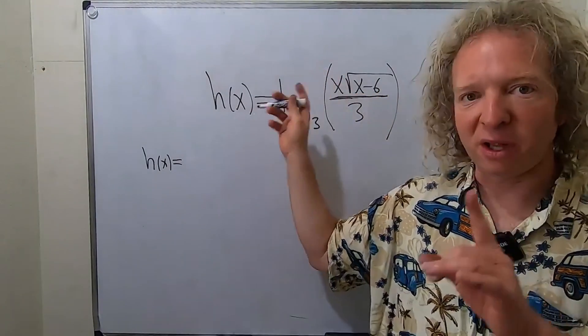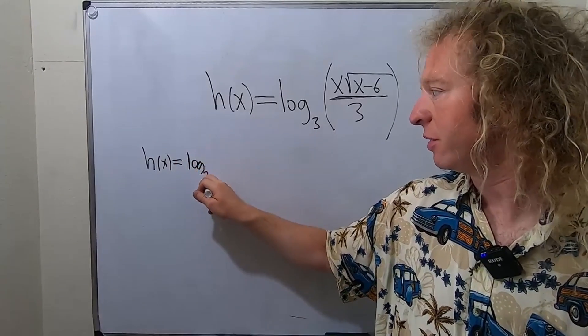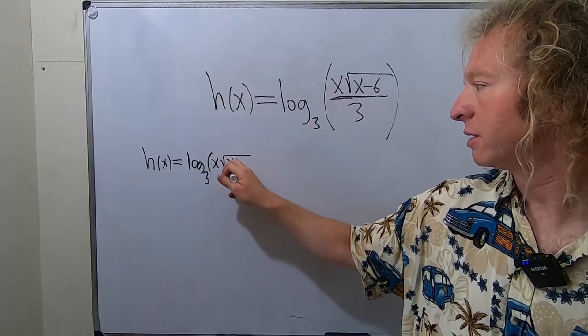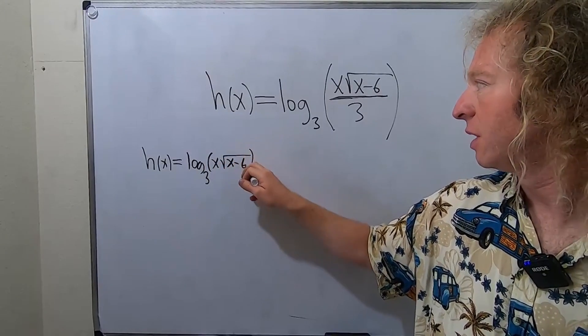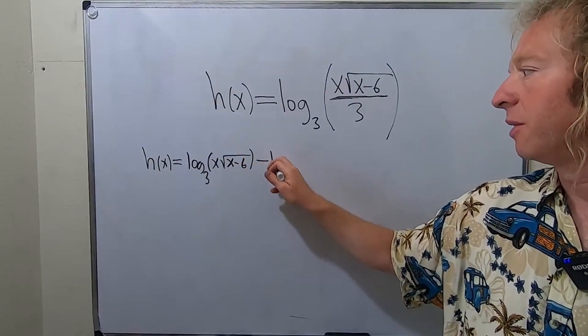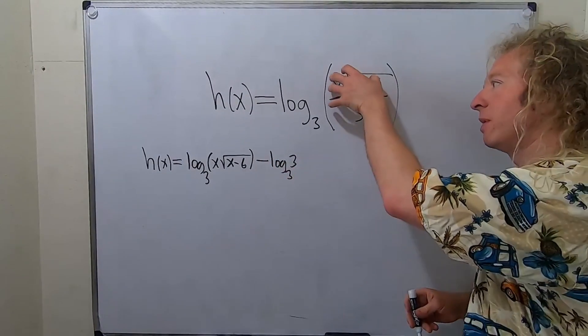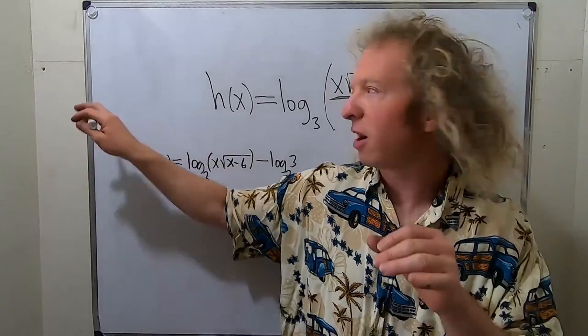So this whole thing will be log of the top piece, log base 3 of x square root x minus 6, and then minus log base 3 of 3. It's just log of the top minus log of the bottom. That's one of the properties of logs.